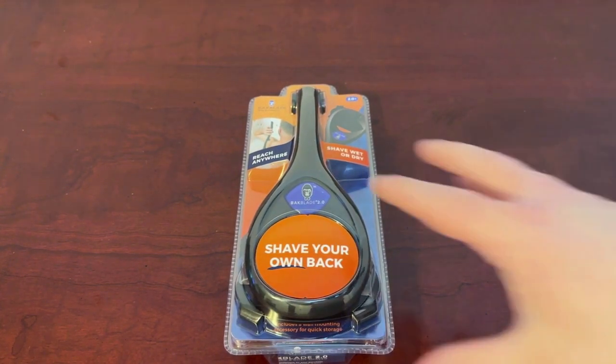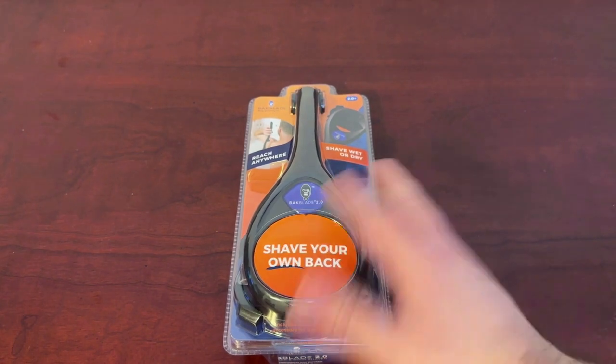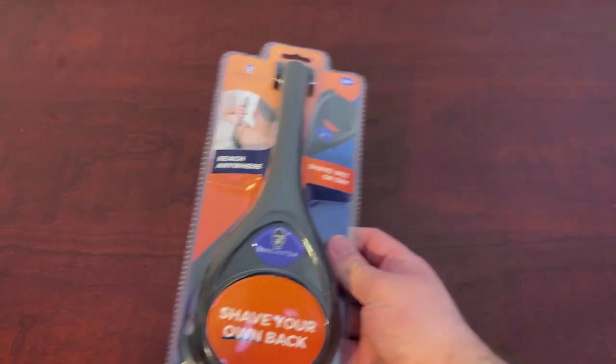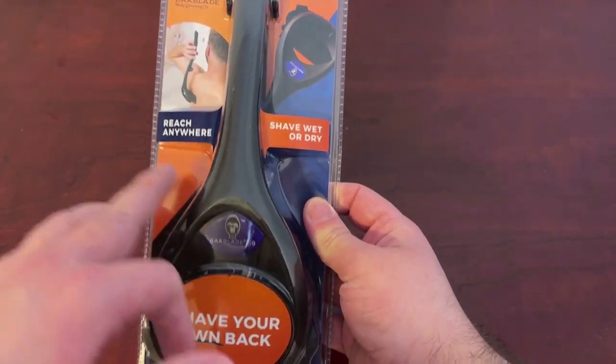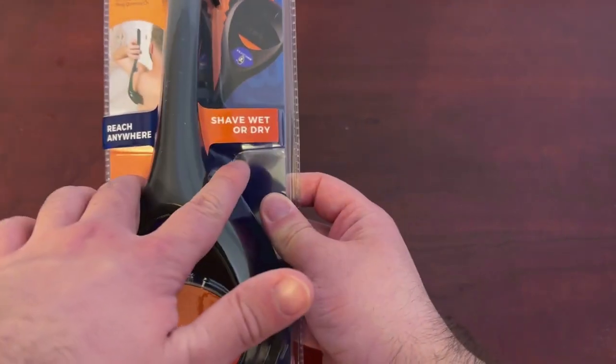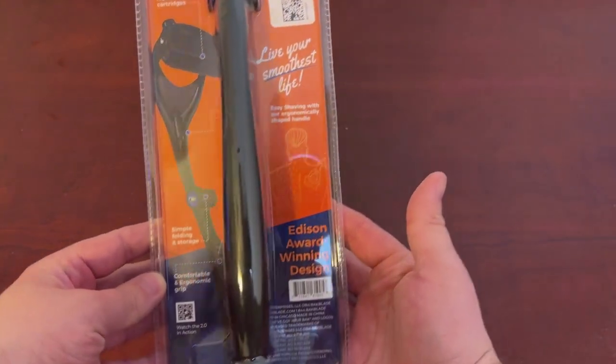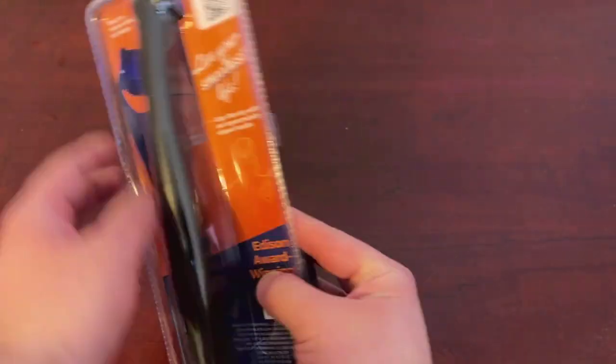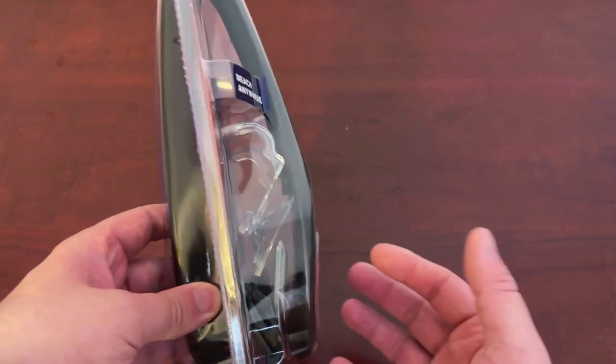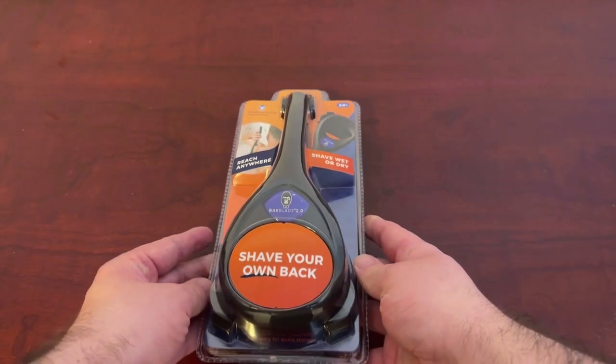At least I thought you might want to see the packaging before I do that. You can see reach anywhere, this is packaged really well. You can use it wet or dry. This is what the packaging is going to look like. This is obviously the back part of the handle. So I'm about to go in, test it.